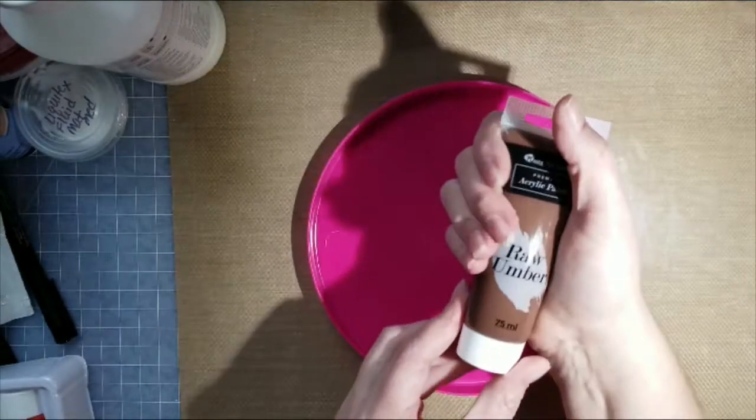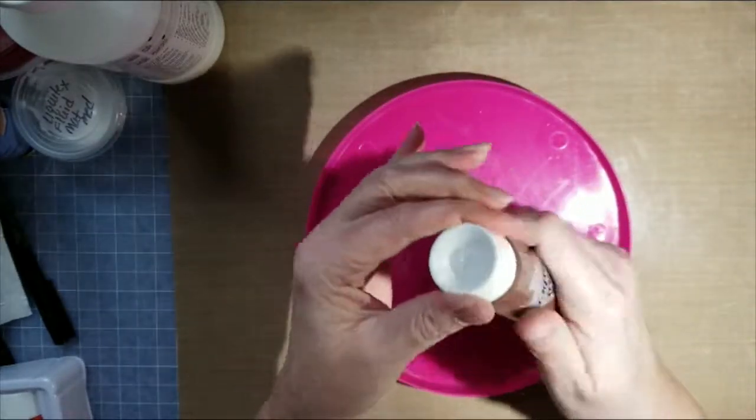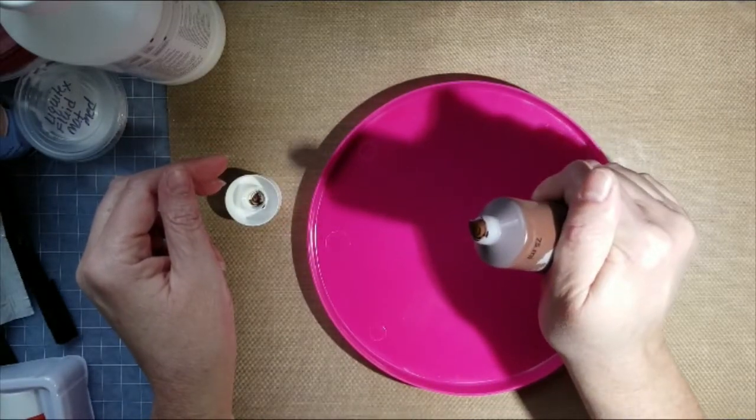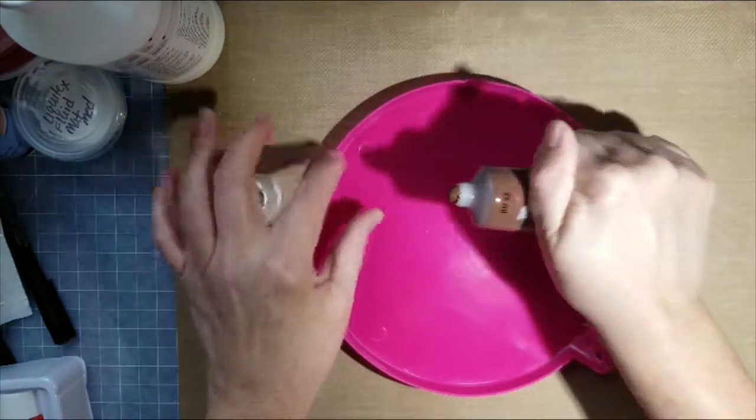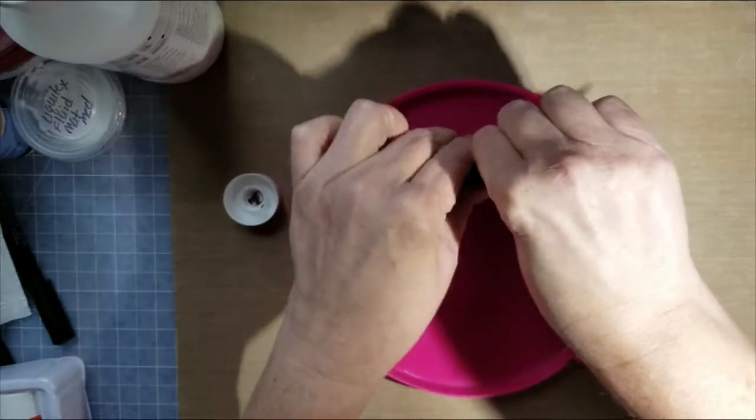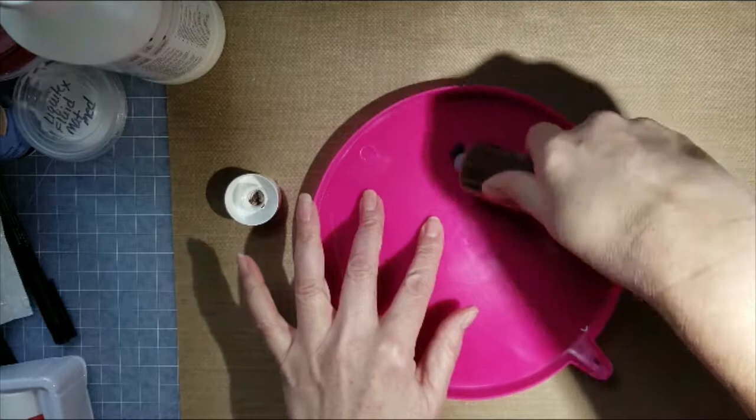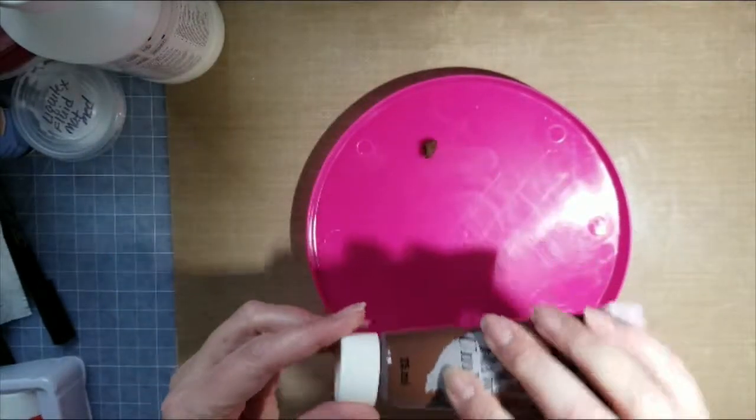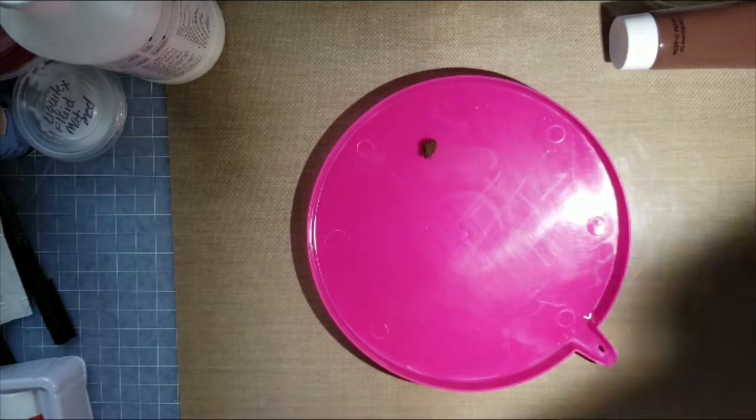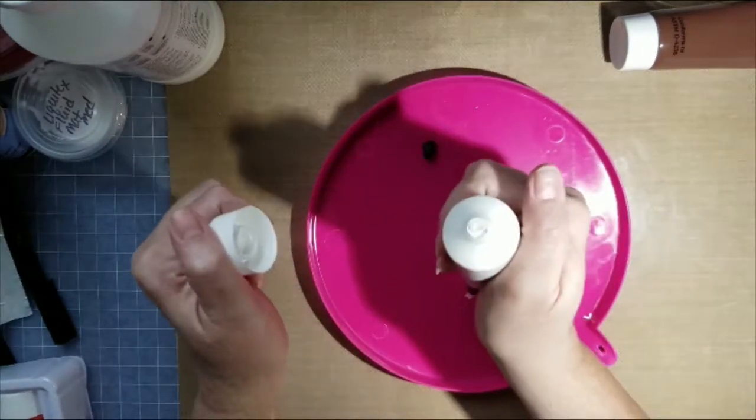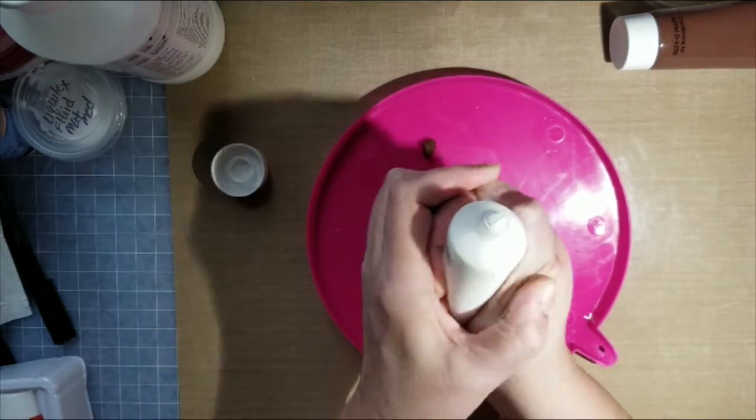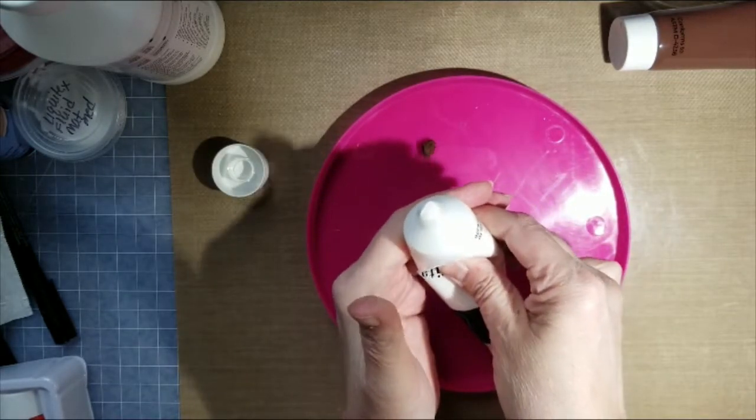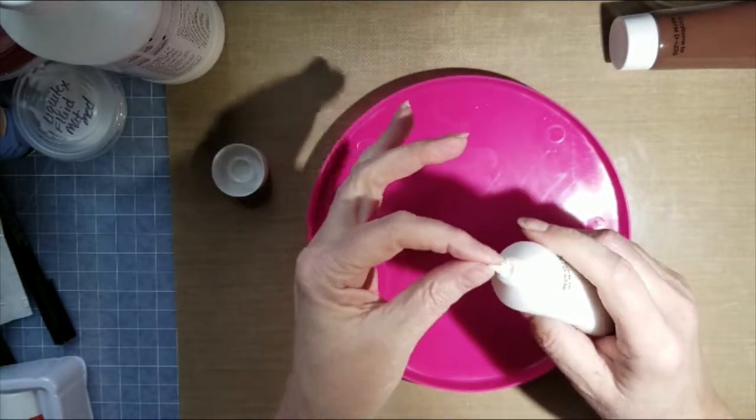These that are difficult to squeeze, see the force - this raw umber comes out in a ball of paint that's dry and spongy, unusable. White I can't even get it out of the tube. There's your little bit of white.